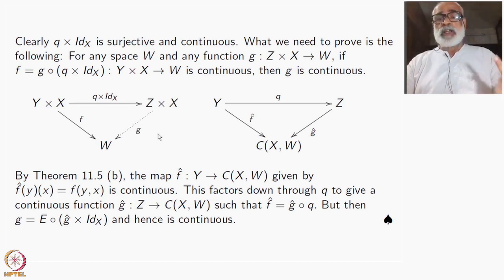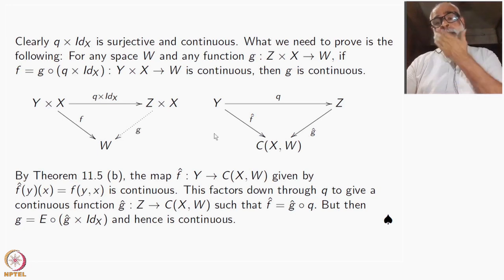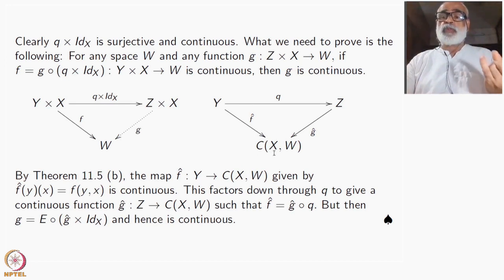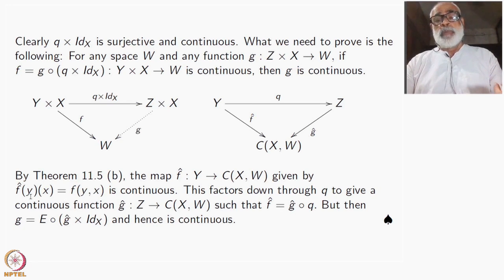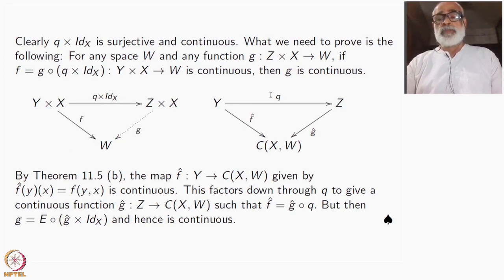How do we use the exponential correspondence? When you have this composite function continuous, we know this is the same as saying there is a map f-hat from Y to the space of all continuous functions from X to W, given by f-hat of any point y being f(y, x). Exponential correspondence says that f-hat is continuous if you know this composite is continuous.